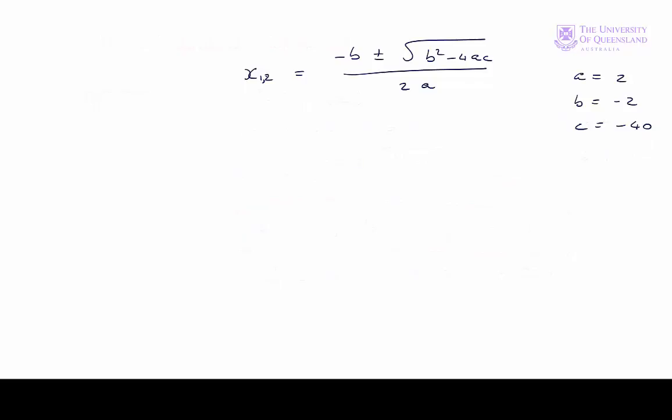Here's our formula and here are our values. Let's substitute them in. We'll have minus minus 2 plus or minus the square root of b squared, which is minus 2 squared so it'll be 4, minus what we saw 4ac was minus 320, so it'll be minus minus 320 over 2 times 2.